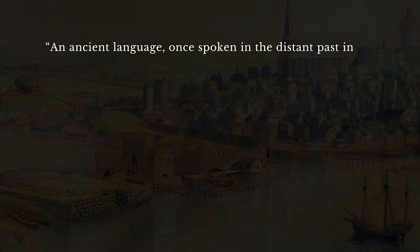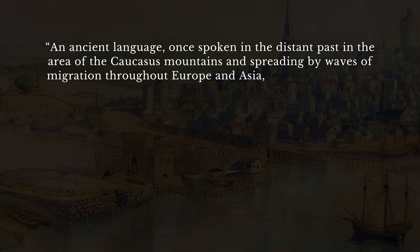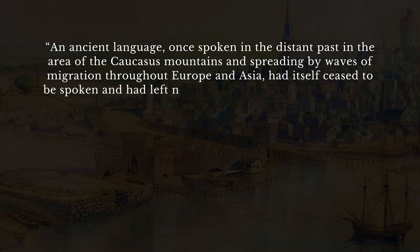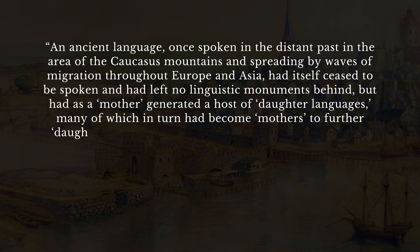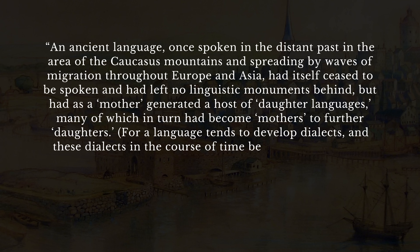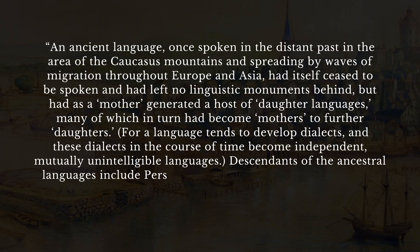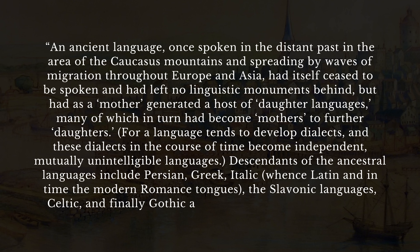In 1686, Andreas Jäger stated that an ancient language, once spoken in the distant past in the area of the Caucasus mountains, and spreading by waves of migration throughout Europe and Asia, had itself ceased to be spoken and had left no linguistic monuments behind, but had, as a mother, generated a host of daughter languages, many of which in turn had become mothers to further daughters. For a language tends to develop dialects, and these dialects, in the course of time, become independent, mutually unintelligible languages. Descendants of the ancestral language include Persian, Greek, Italic — whence Latin and in time the modern Romance tongues — the Slavonic languages, Celtic, and finally Gothic and the other Germanic tongues.